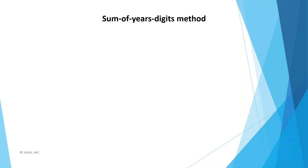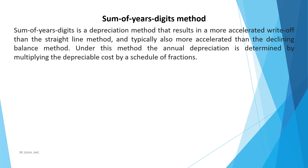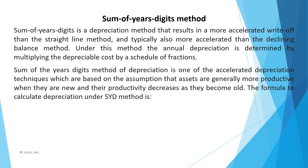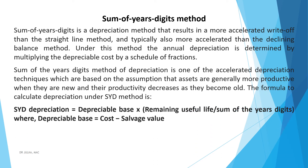One more method for depreciation: the Sum of Years Digit method. Under this method, depreciation of a year equals depreciable base multiplied by remaining useful life divided by sum of the year's digits, where depreciable base equals cost minus salvage value.